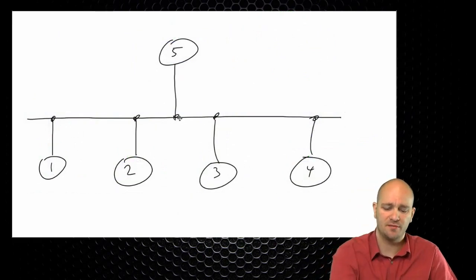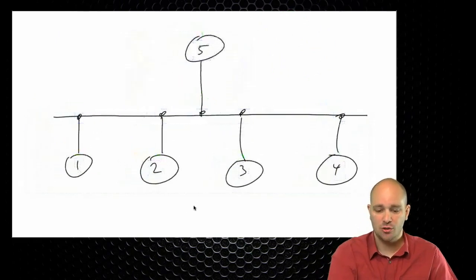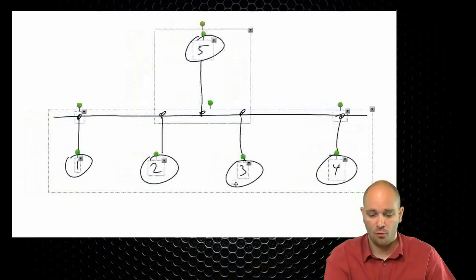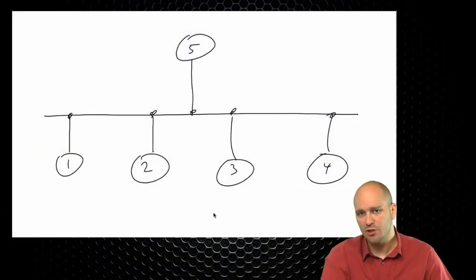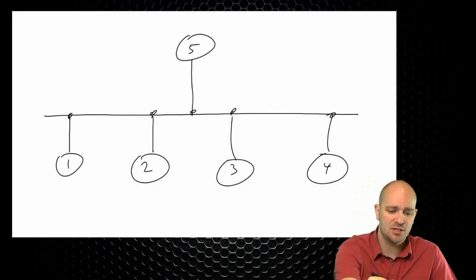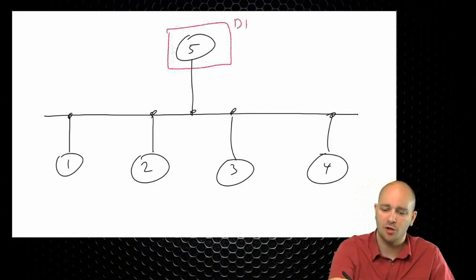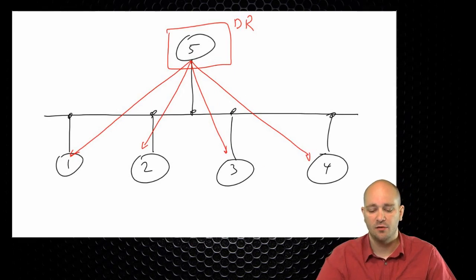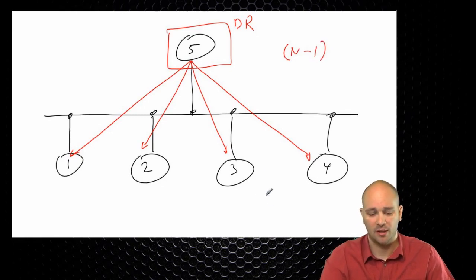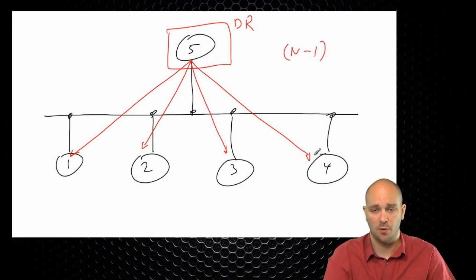This is why in OSPF there is the concept of the designated router, which acts as a virtual hub for the exchange of information. Not all traffic flows through it — it's just an exchange hub. So let's say R5 became our designated router. R5 will maintain adjacencies with these four routers. The number of adjacencies is now n-1 in our network, creating a virtual hub-and-spoke information exchange.